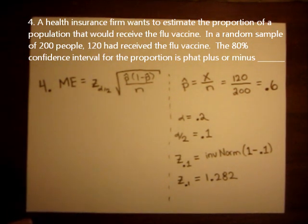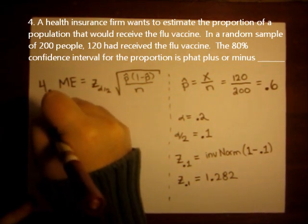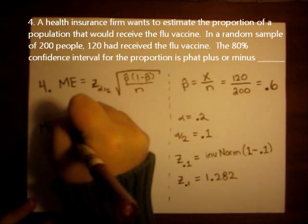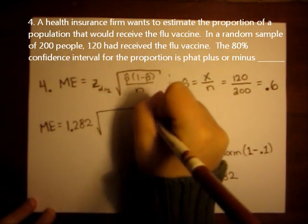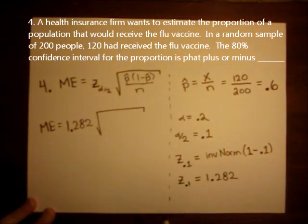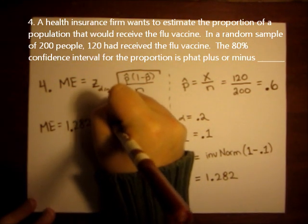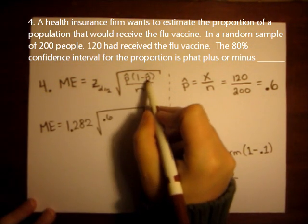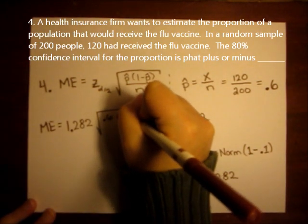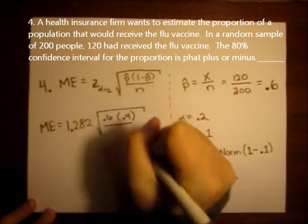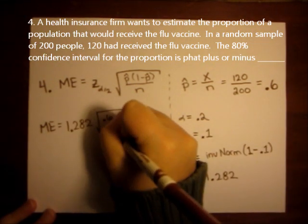So now we have everything we need to plug into the margin of error formula. So my margin of error is 1.282 times the square root of p hat, which is 0.6, times 1 minus p hat. 1 minus 0.6 is 0.4 divided by n, and n is 200.